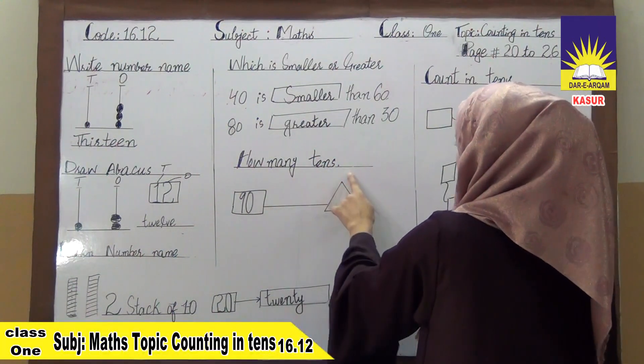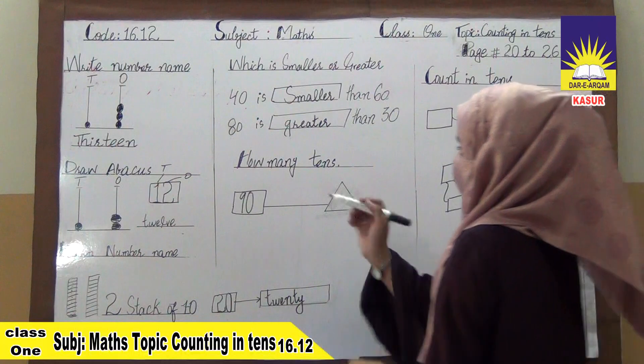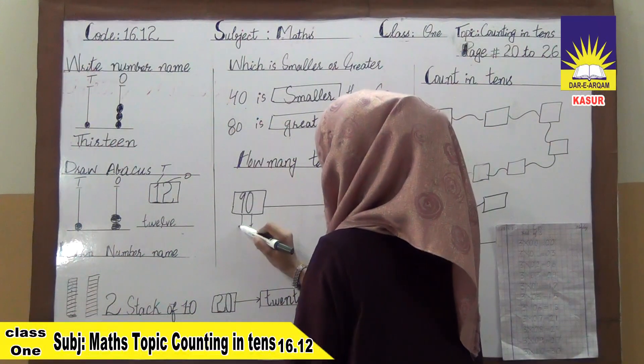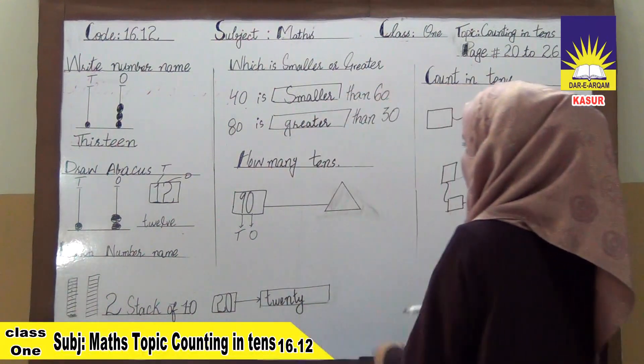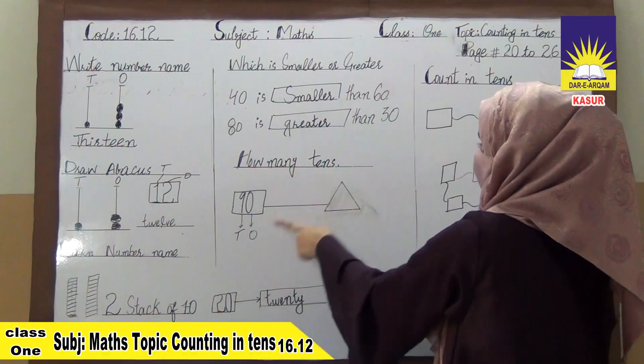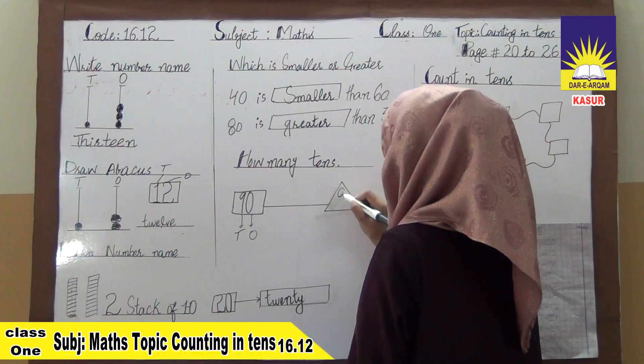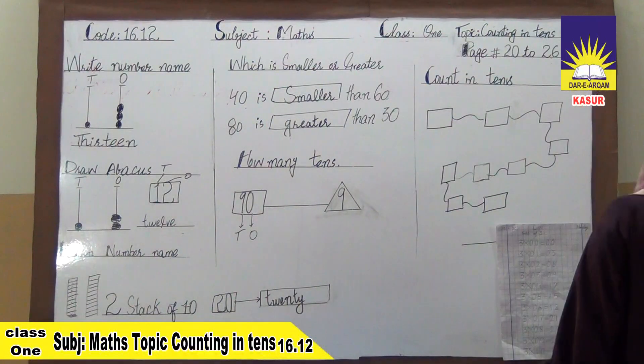Next question is how many tens? This is the number 90. We all know that we have already studied this. First number is tens and second number is ones. So, we have asked how many tens. So, tens number is 9. So, we can write it as 9.